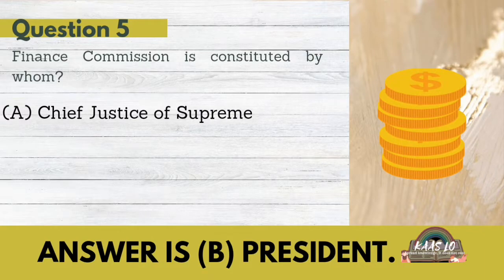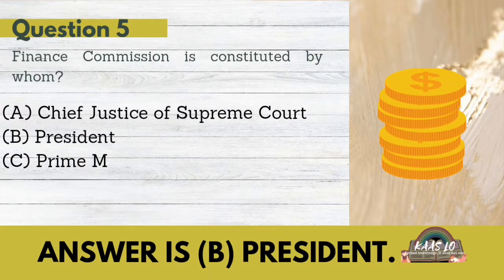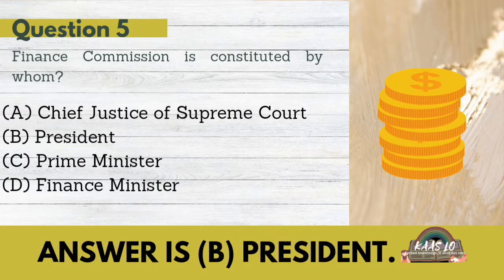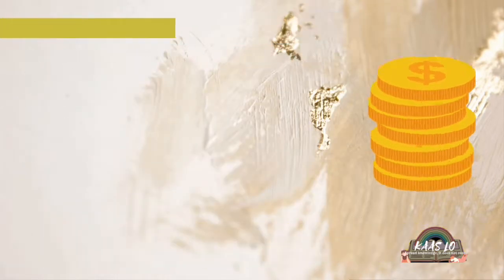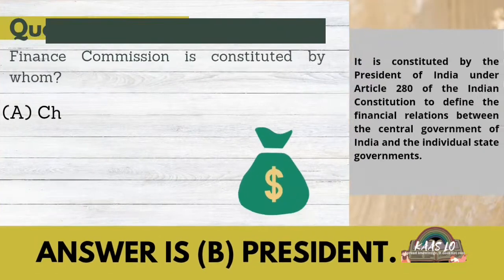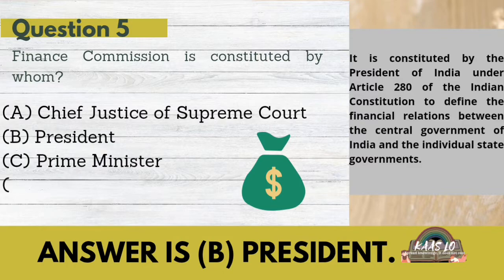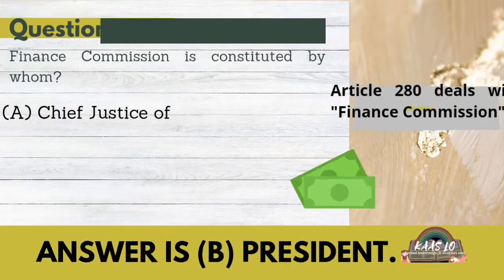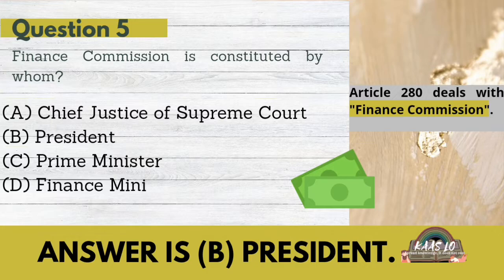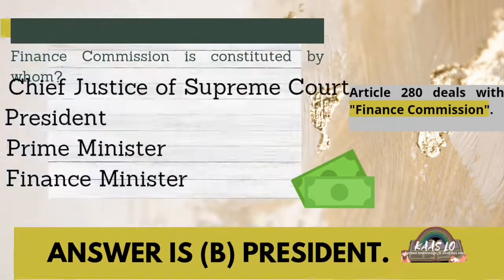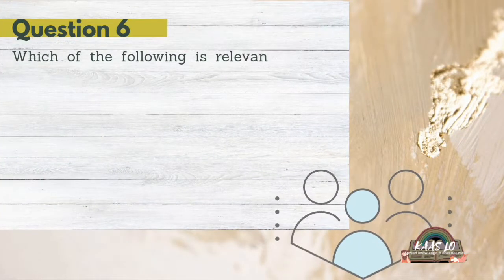The next question is: Finance Commission is constituted by whom? The options are A. Chief Justice of Supreme Court, B. President, C. Prime Minister, D. Finance Minister. The correct option is B. President. The President of India under Article 280 of the Indian Constitution defines the financial relations between the central government of India and the individual state governments. Article 280 deals with the Finance Commission.